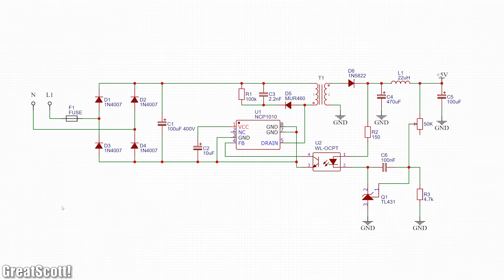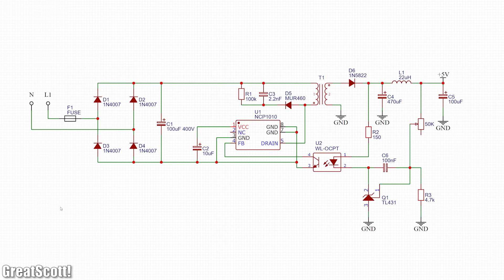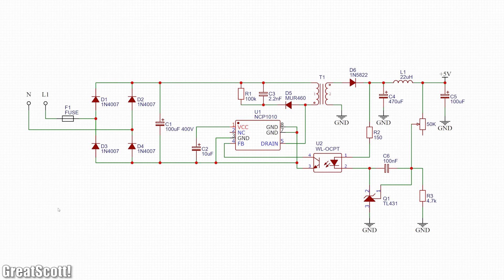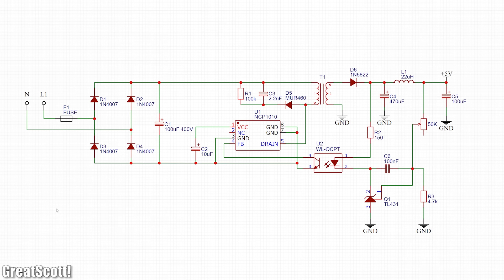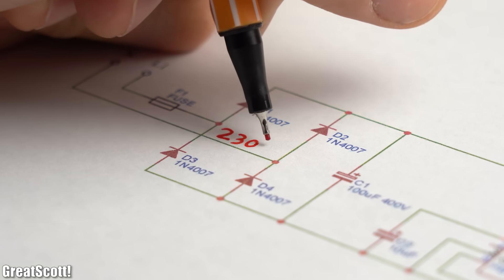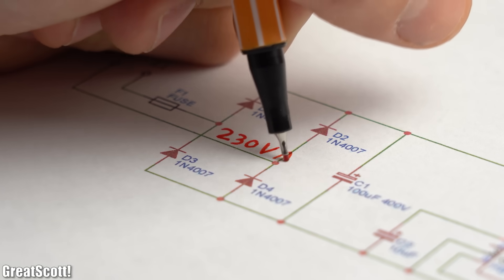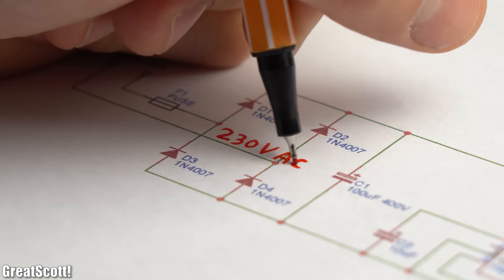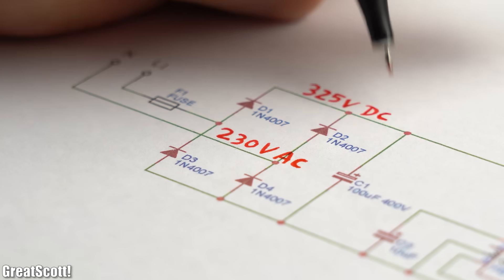With that being said, here is the schematic. The fundamental components are pretty much the same in comparison to the previous flyback converter schematic. But of course we do need a full bridge rectifier this time in order to convert our 230V AC into 325V DC.